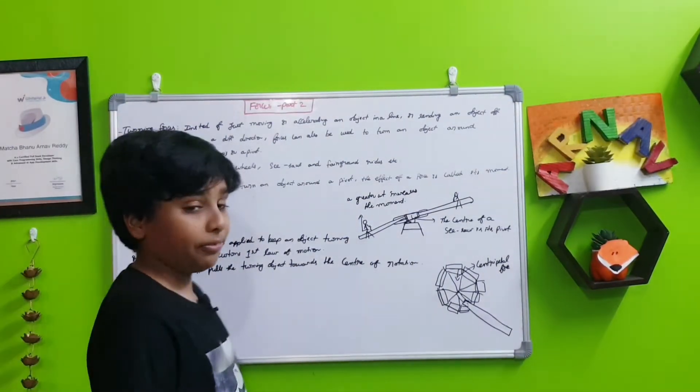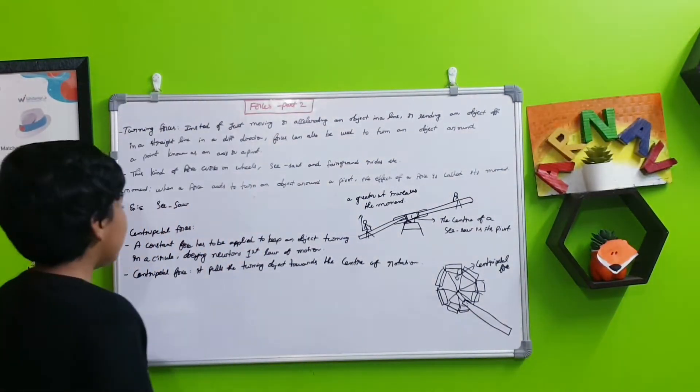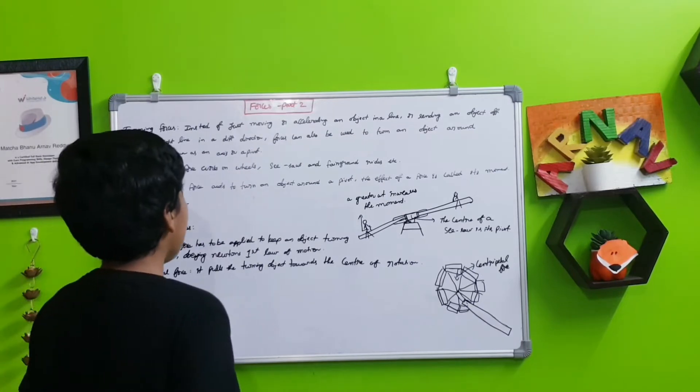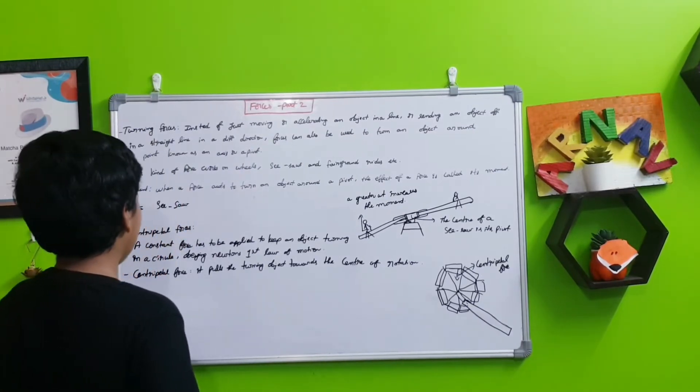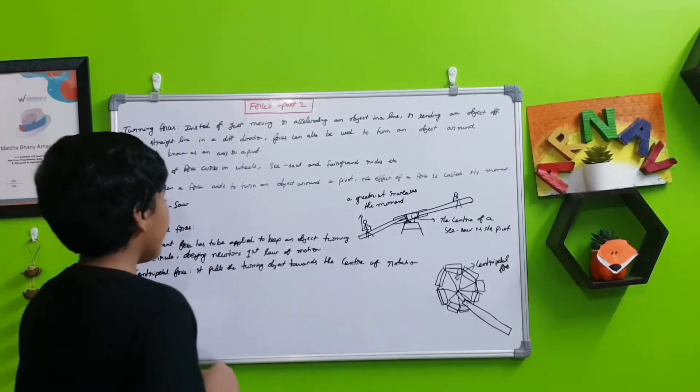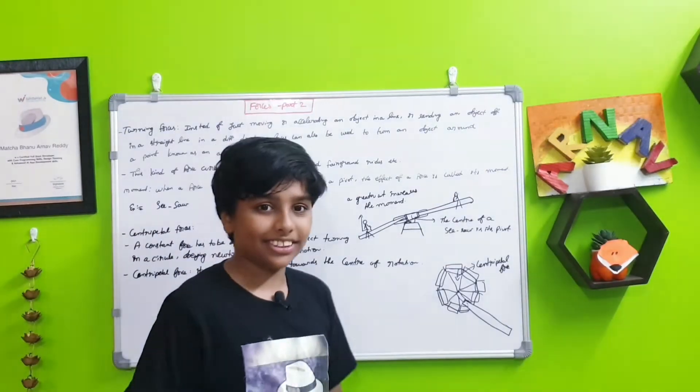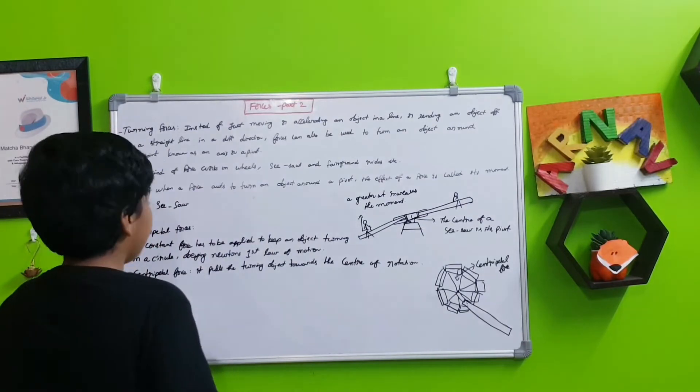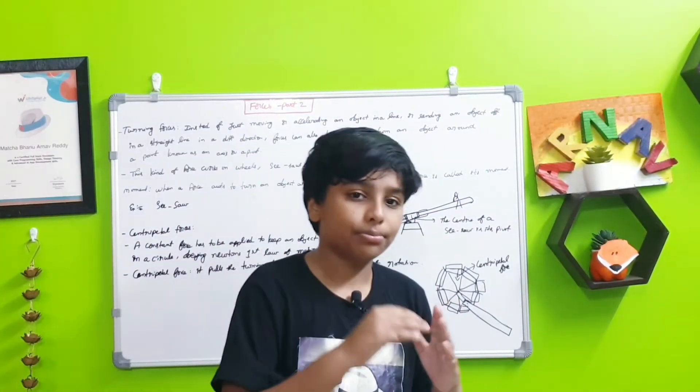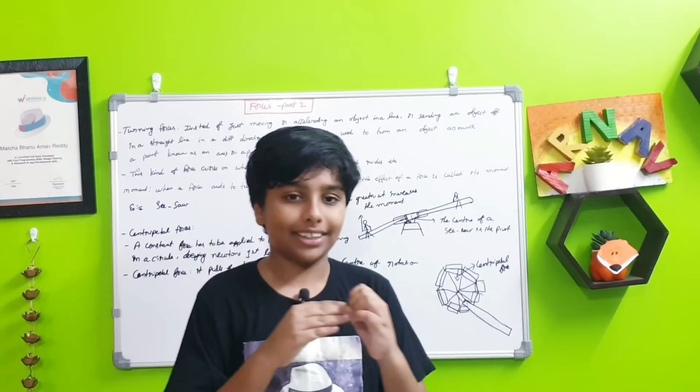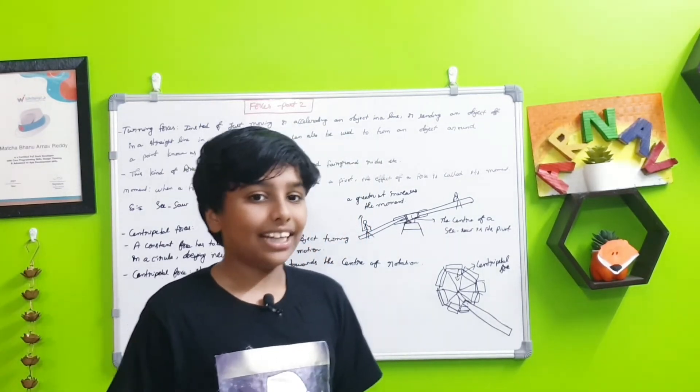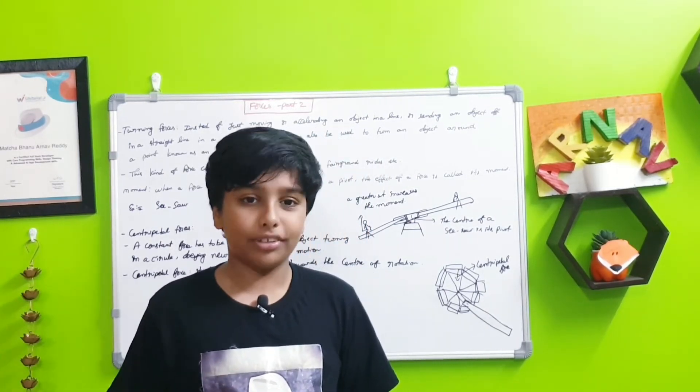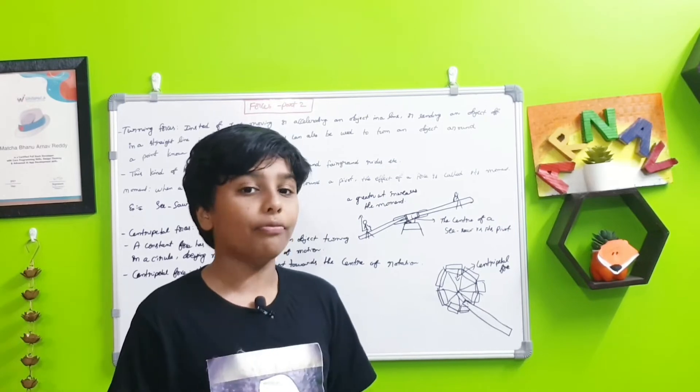Next, centripetal forces. A constant force has to be applied to keep an object turning in a circle, being Newton's first law of motion. For something to always move, a constant force should be pushing the thing. That is the first law of motion by Newton.